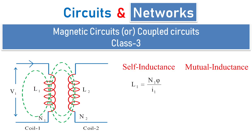In the previous classes we have seen the formula for self inductance, which is given by L1 = N1·φ / I1, whereas mutual inductance between two coils is given by M = N2·φ2 / I1, and the coefficient of coupling between the two coils is given by K = M / √(L1·L2).